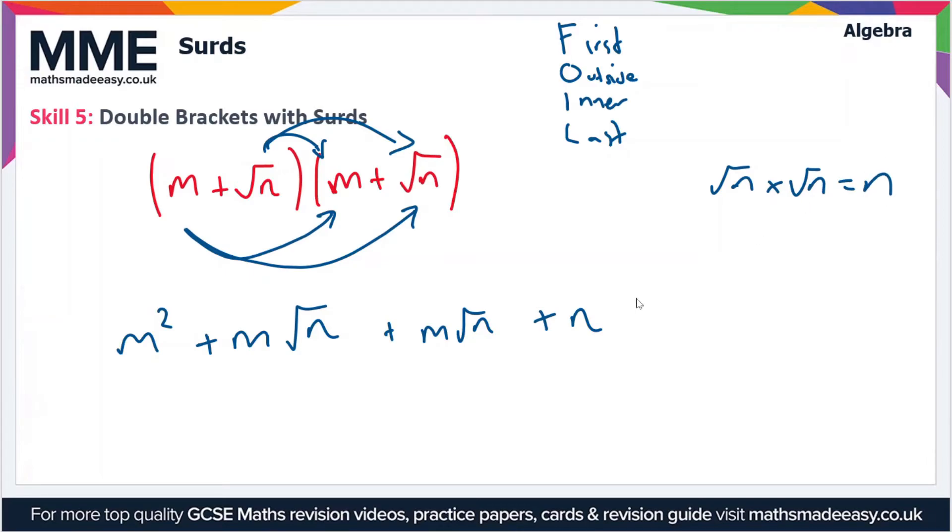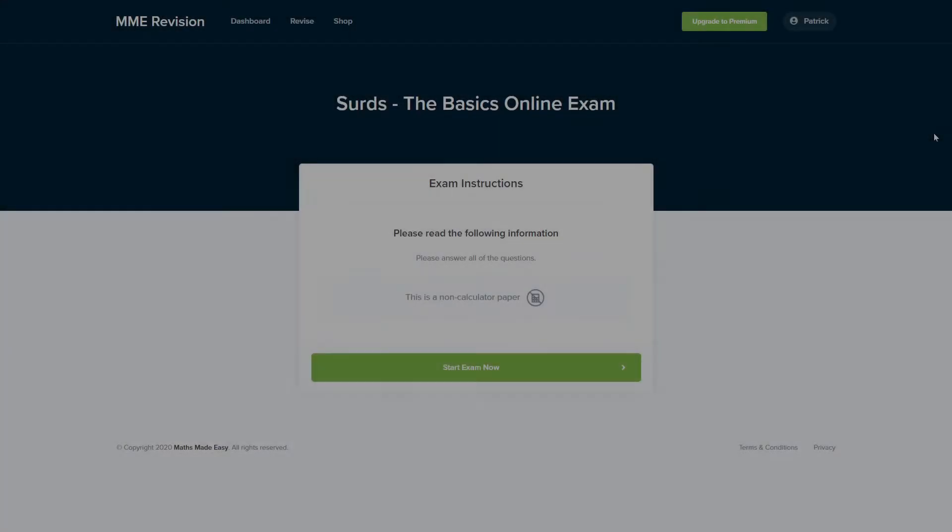Let's collect the like terms now. We've got m² on its own. We have two terms, m√n, which are both the same, so this simplifies to 2m√n. And finally we have n on the end. So that's how you expand double brackets with surds.